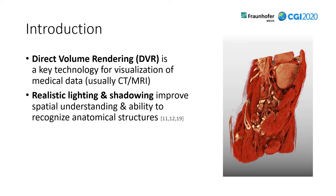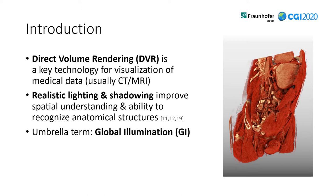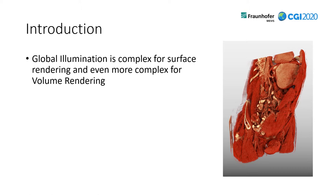You can also see this now in this updated picture where shadows and lighting are computed and simulated. The image gets way more depth and it's also easier to recognize structures and measure distances visually. These realistic lighting and shadowing techniques are usually summarized under the umbrella term global illumination. Global illumination is very complex already for surface rendering and is a very well-known research field. However, it's even more complex for volume rendering because instead of discrete surfaces or pixels, we actually deal with whole volumes.